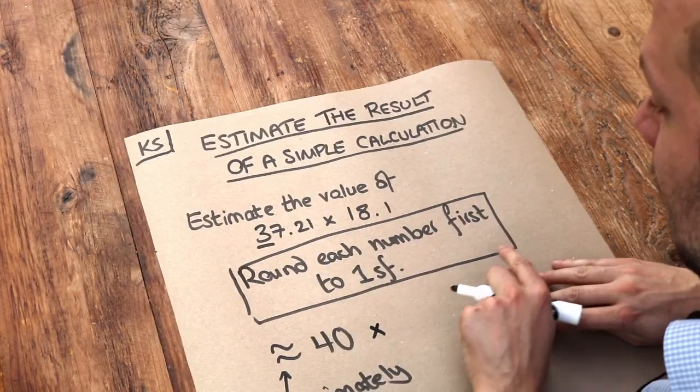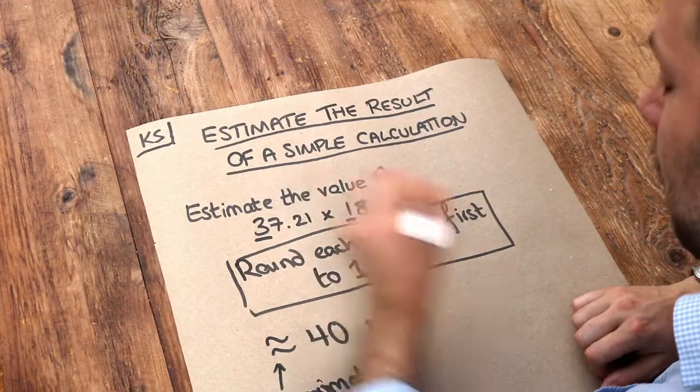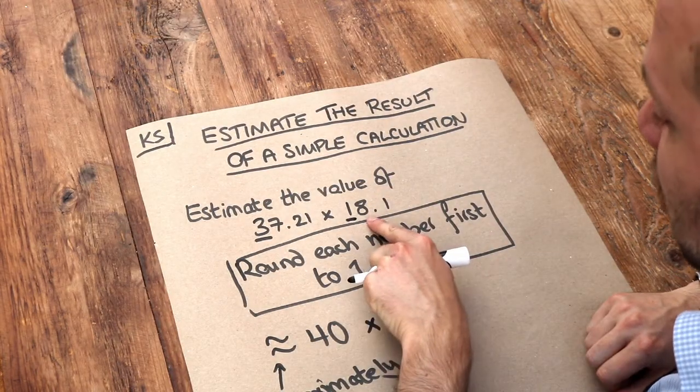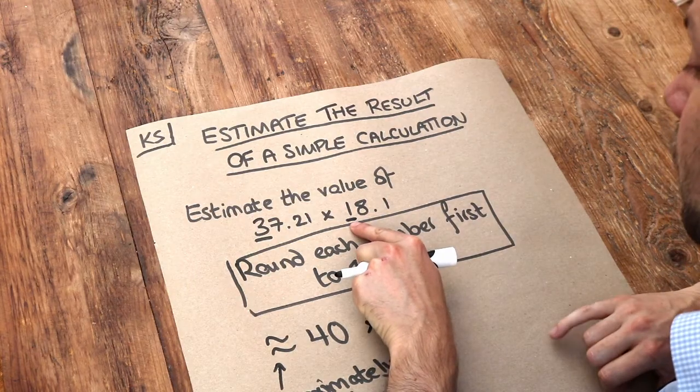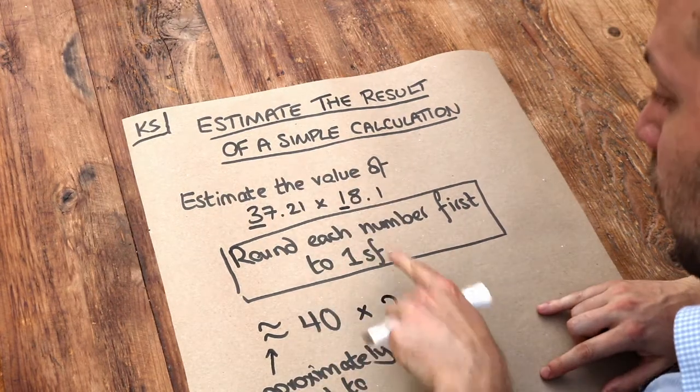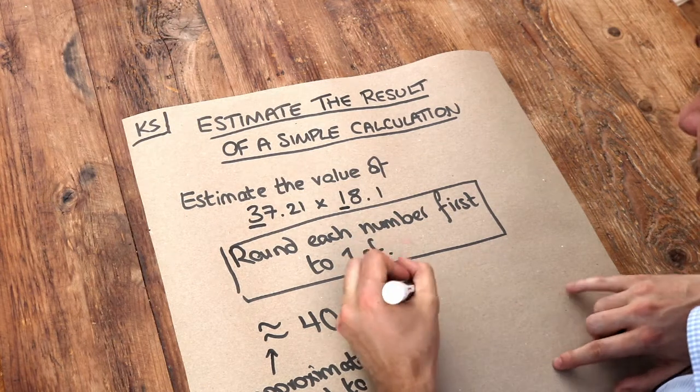What about this number here? Well, to one significant figure we underline the first non-zero digit. We look at the digit after. Is it five or more? Yes it is. So that goes up to two. But we want to keep this as the tens digit, so we have to put a zero after it.